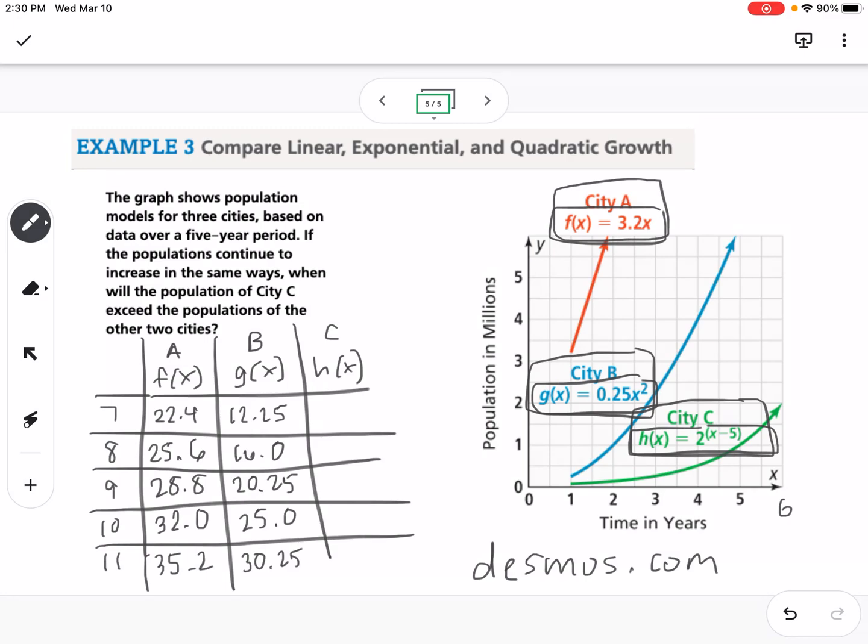And then finally we're going to plug in values into the X in city C, so 2 to the X minus 5. So we would get from 7, we get 4, 8, 16, 32, 64.